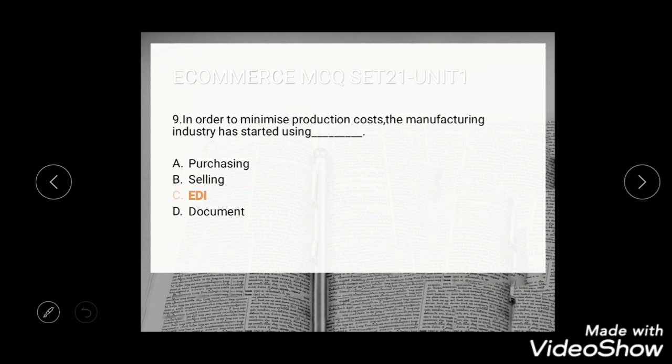Question 9: In order to minimize production cost, the manufacturing industry has started using purchasing and selling EDI documents. The correct answer is EDI.